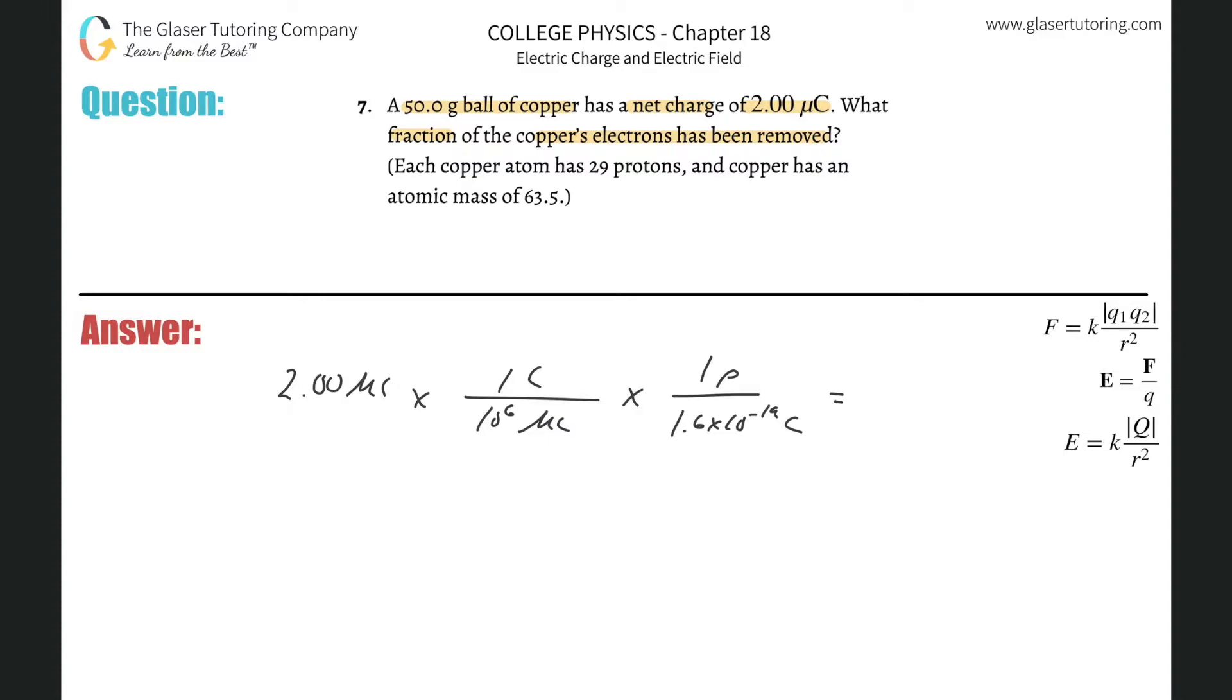So we take two, divide it by 10 raised to the 6th, multiplied by 1.6 times 10 to the minus 19th. And we get a value of about 1.25 times 10 to the 13th excess protons.